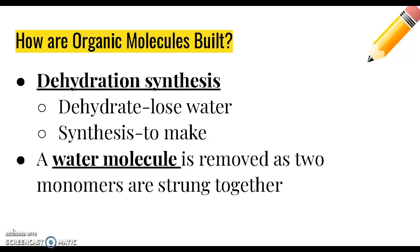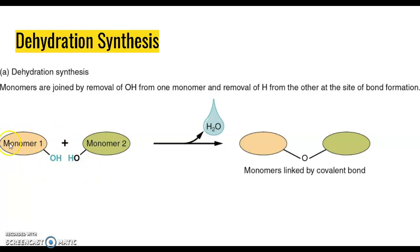For example, we have monomer one and monomer two. We have some oxygen and hydrogen atoms sticking out of those monomers. We take two H's and one oxygen from both monomers in order to make water. So we remove two hydrogens and one oxygen and make a water molecule. What that does is form a bond, a connection between those two monomers to start to build a polymer.